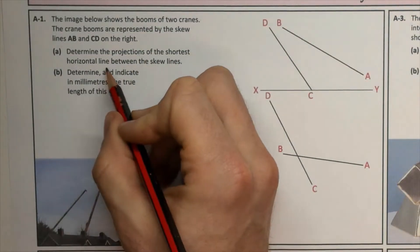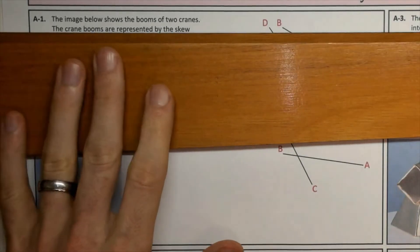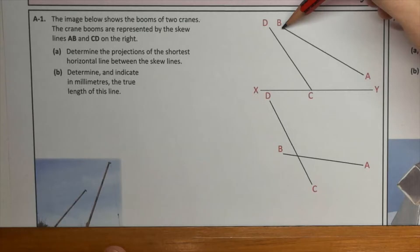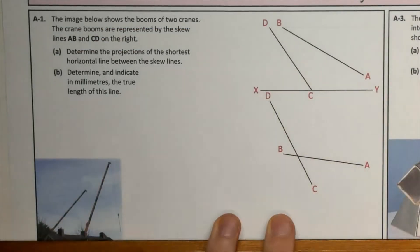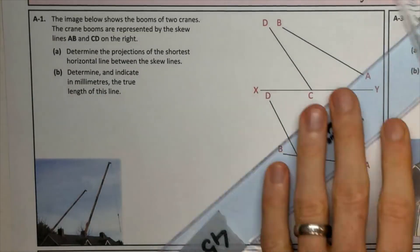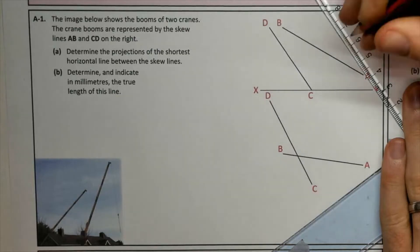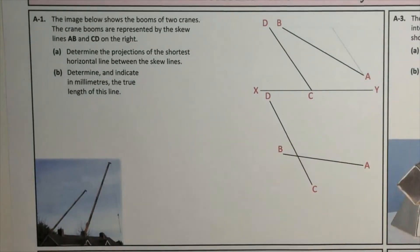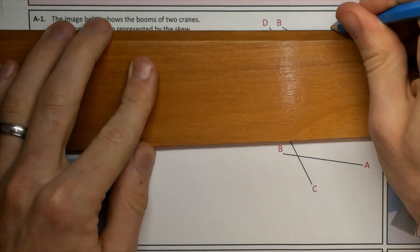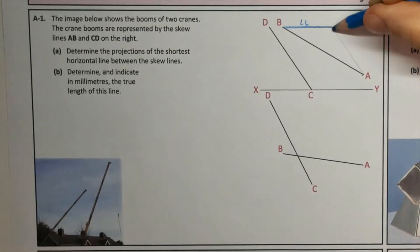Determine the projections of the shortest horizontal line between skew lines. So we need to take a level line here first of all and we'll take a level line from B and then go parallel to CD from A. And that has created a plane for us. So here's my level line, and that has created a plane here.